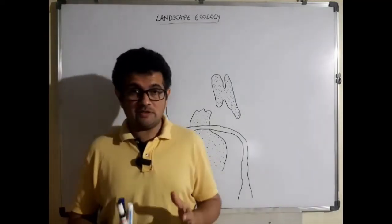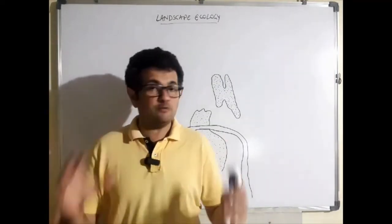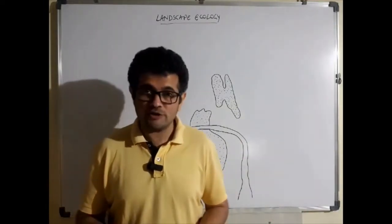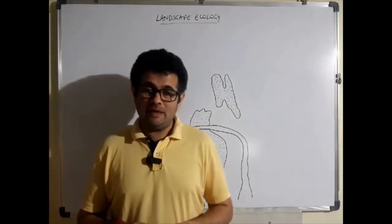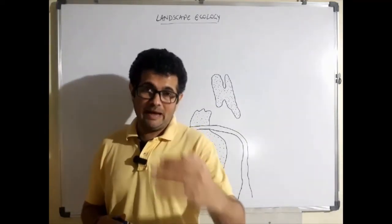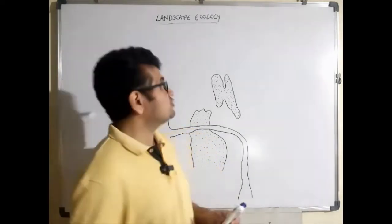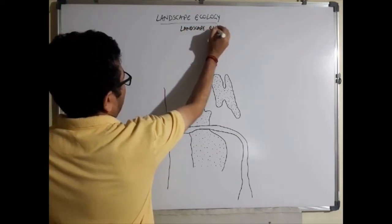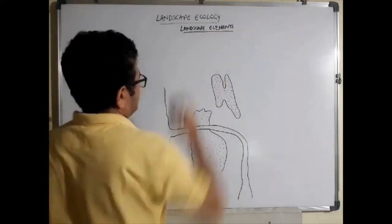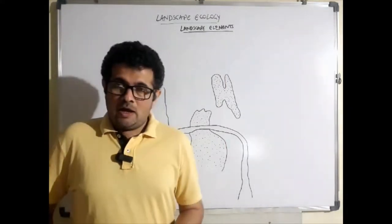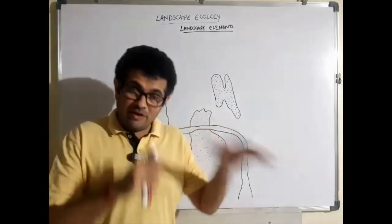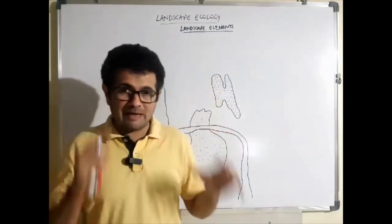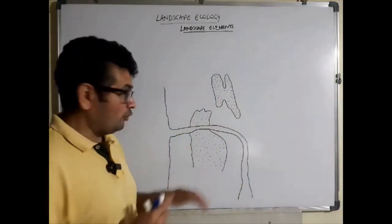We have seen what landscape ecology is — studying different ecosystems present in a particular area or landscape. We covered the introduction in the previous lecture. Today we are going to advance a bit ahead in the topic and look at various landscape elements. There is one major element under which there are three sub-elements — one dominant element and three below it.